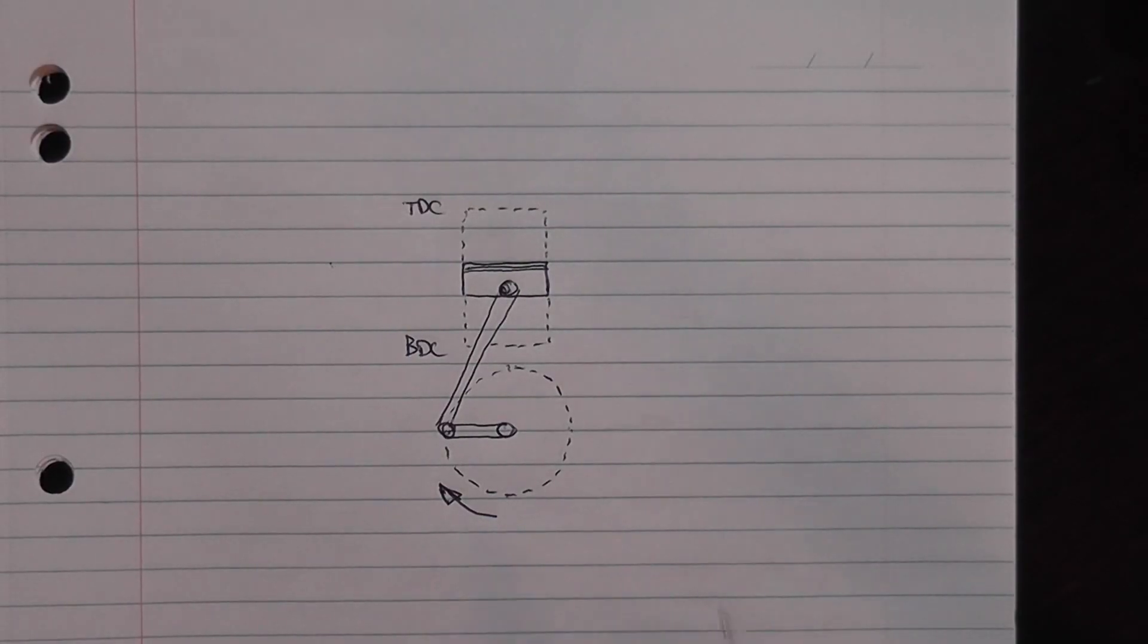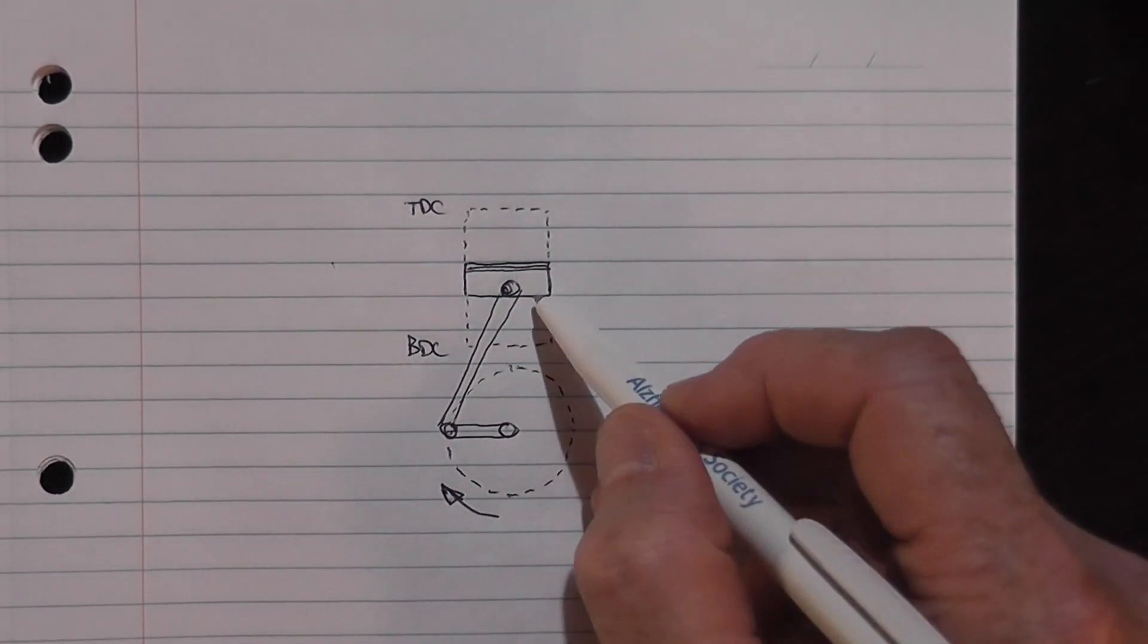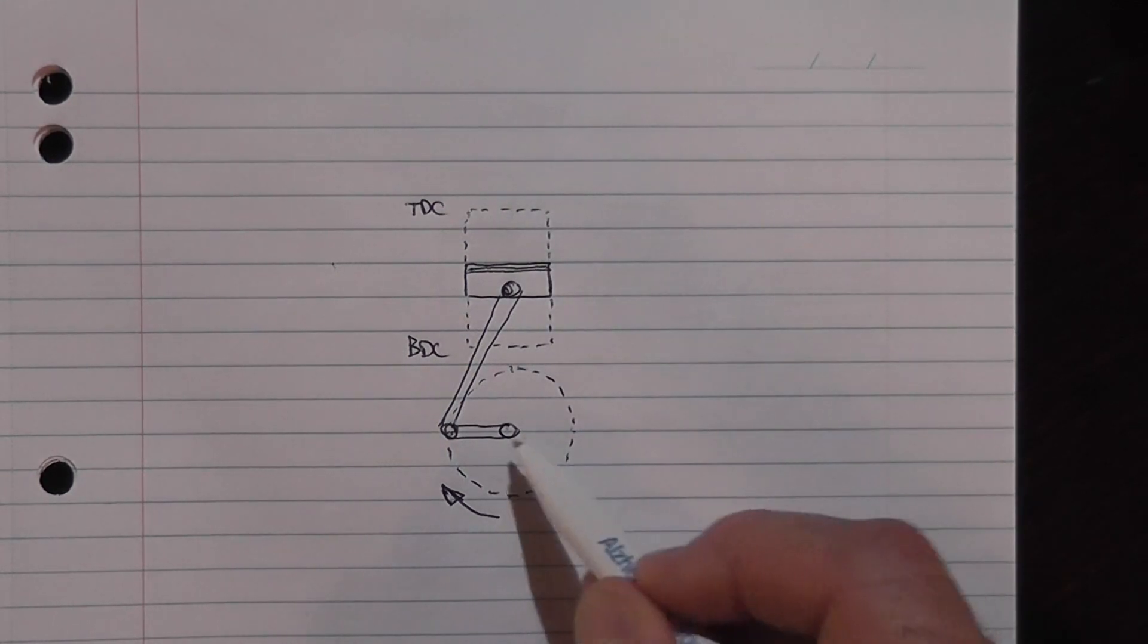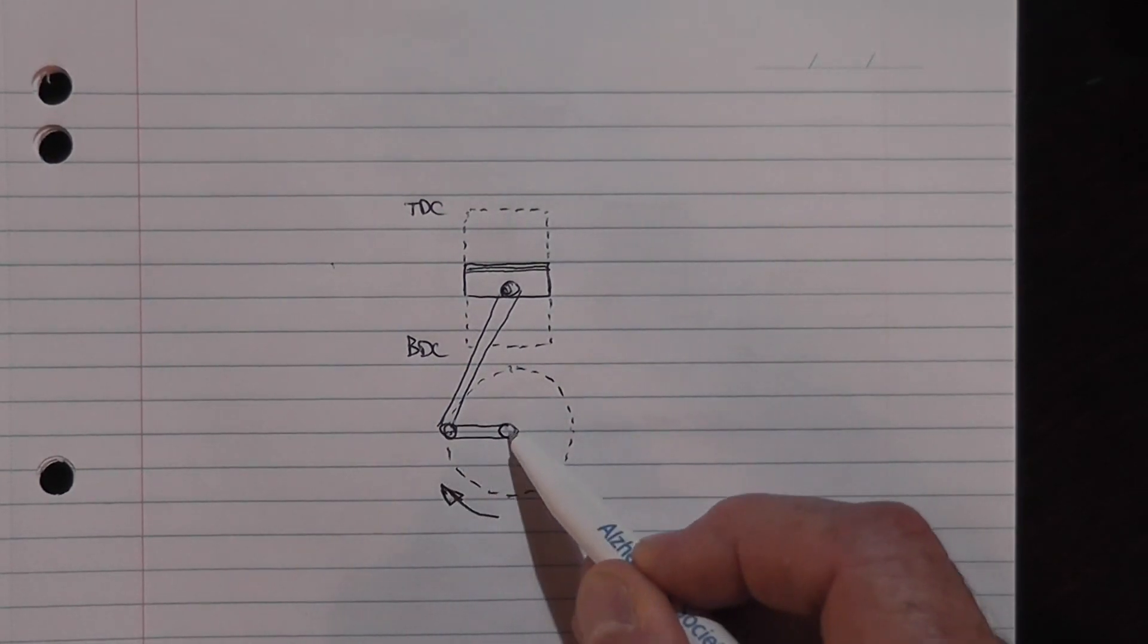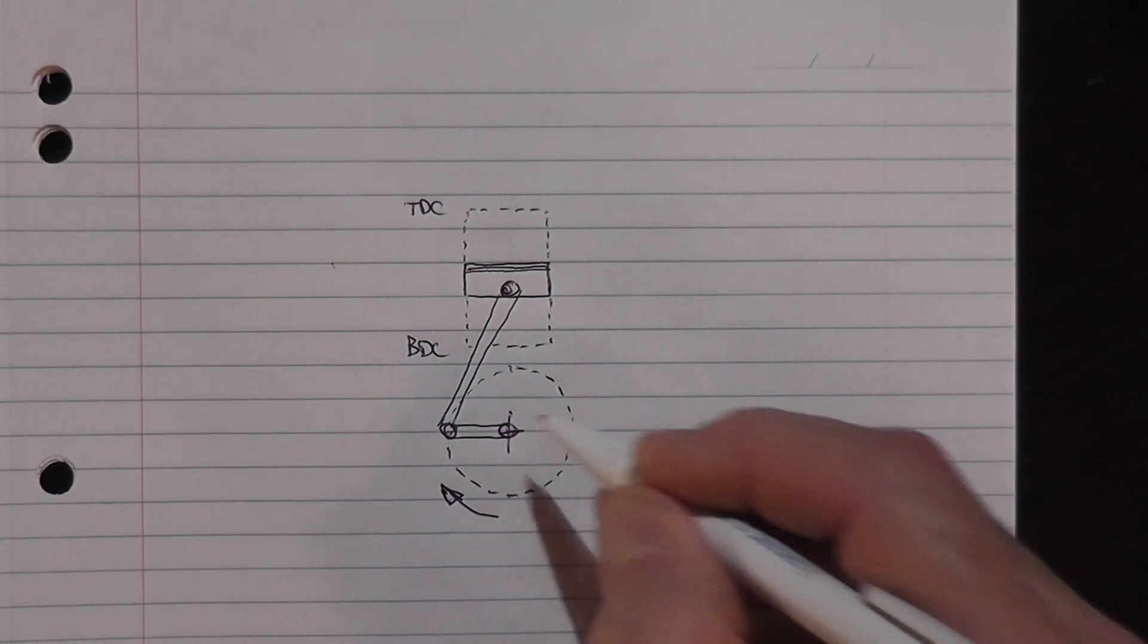So looking at a single cylinder arrangement first off, I've got a rough sketch here, got a piston, con rod, a crankshaft which runs through here and this is the crank, throw of the crank.